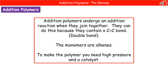The first type of polymer we're looking at is addition polymers. In order to make an addition polymer, the monomers undergo an addition reaction when they join together. The reason they can do this is because the monomers are alkenes, which means they've got a carbon-carbon double bond. That double bond can become broken, giving us the ability to join those carbons to others.